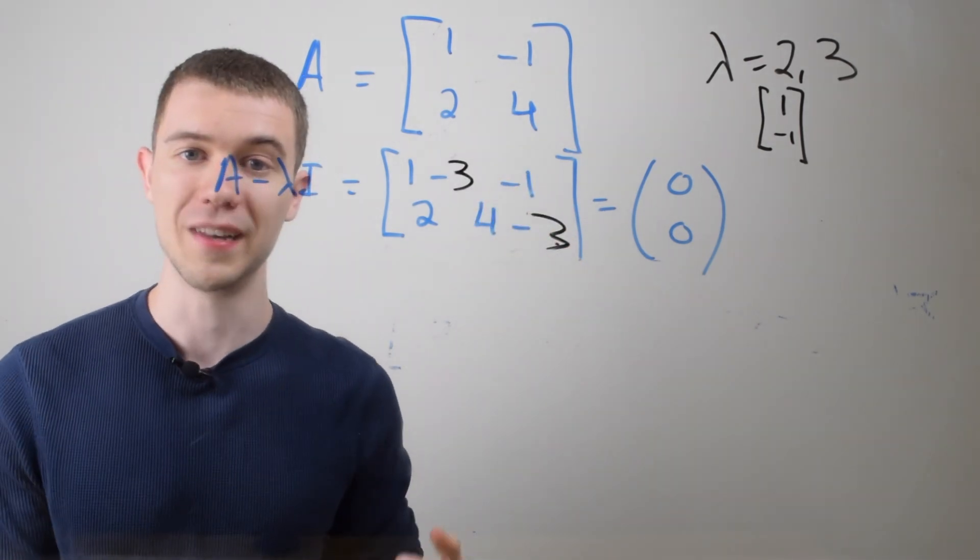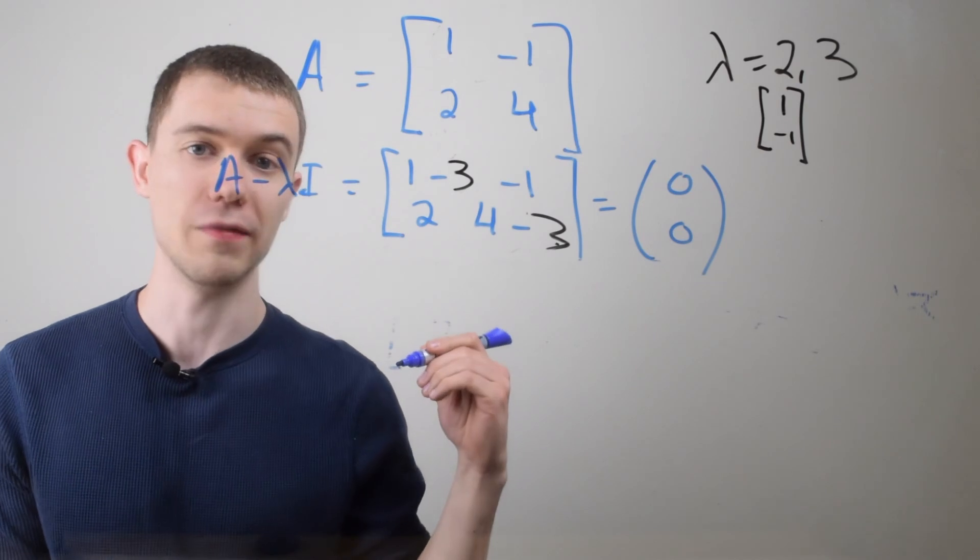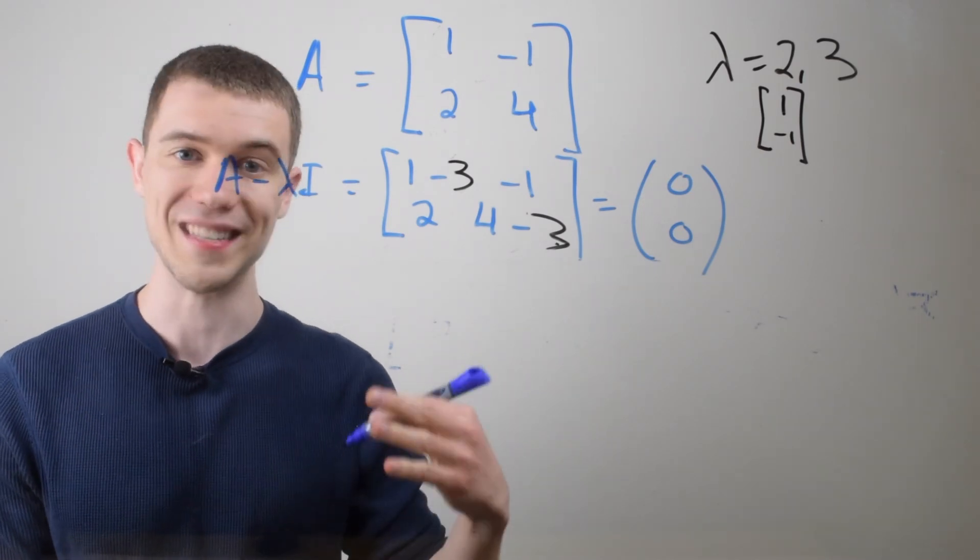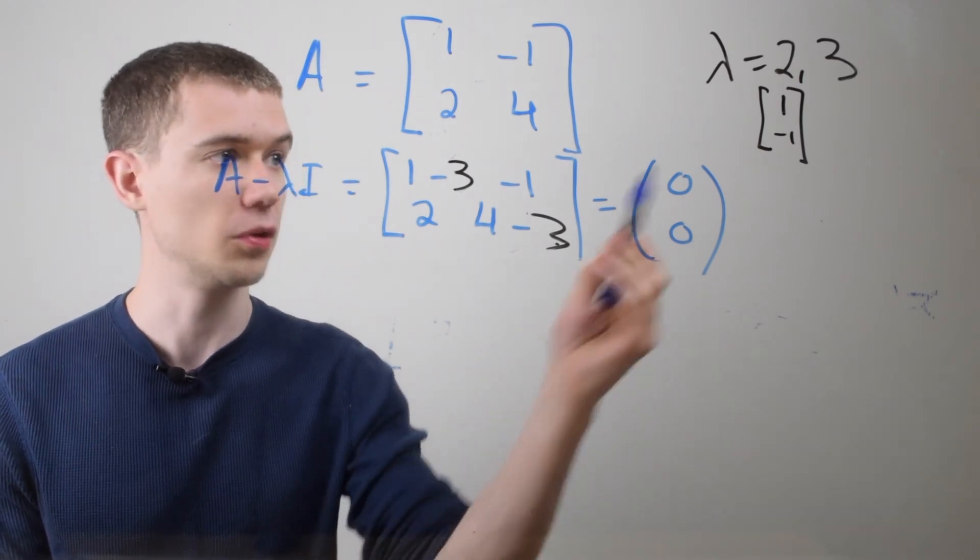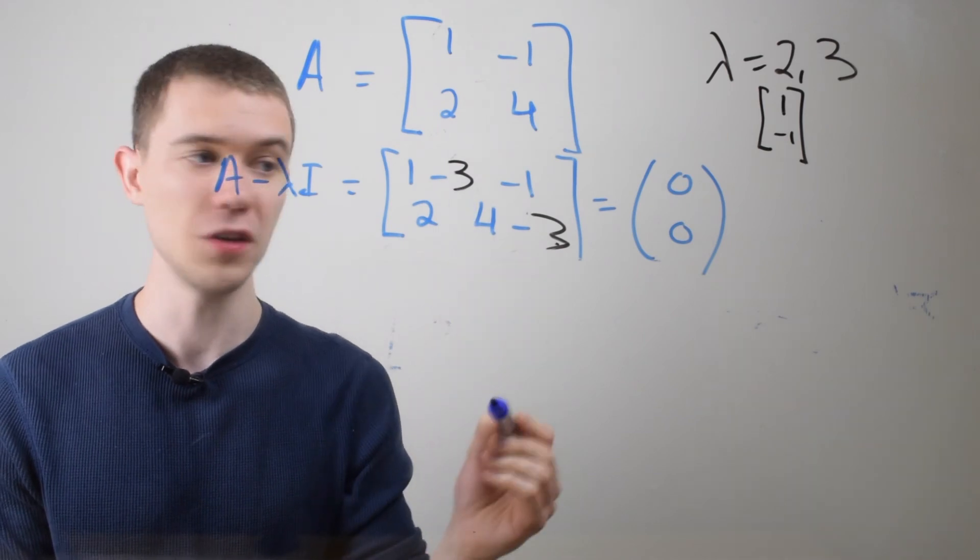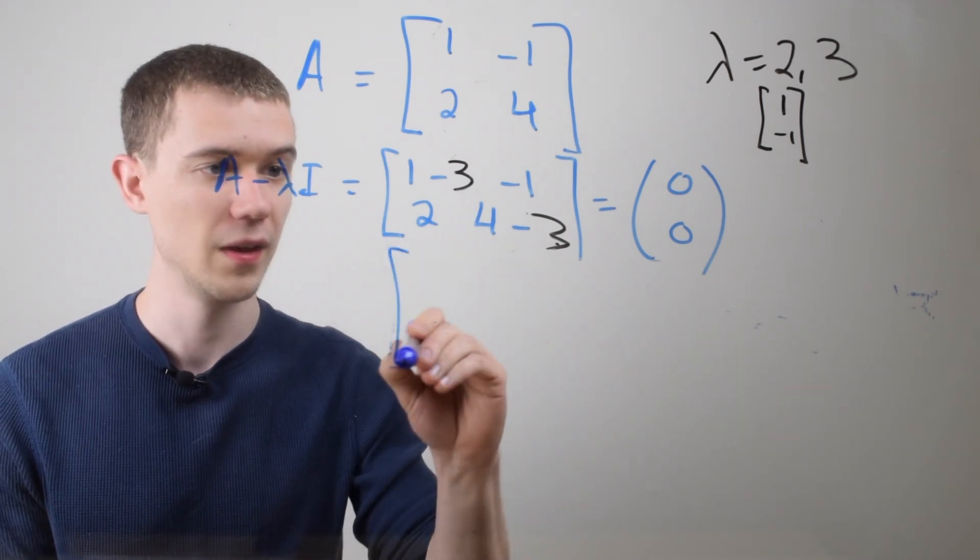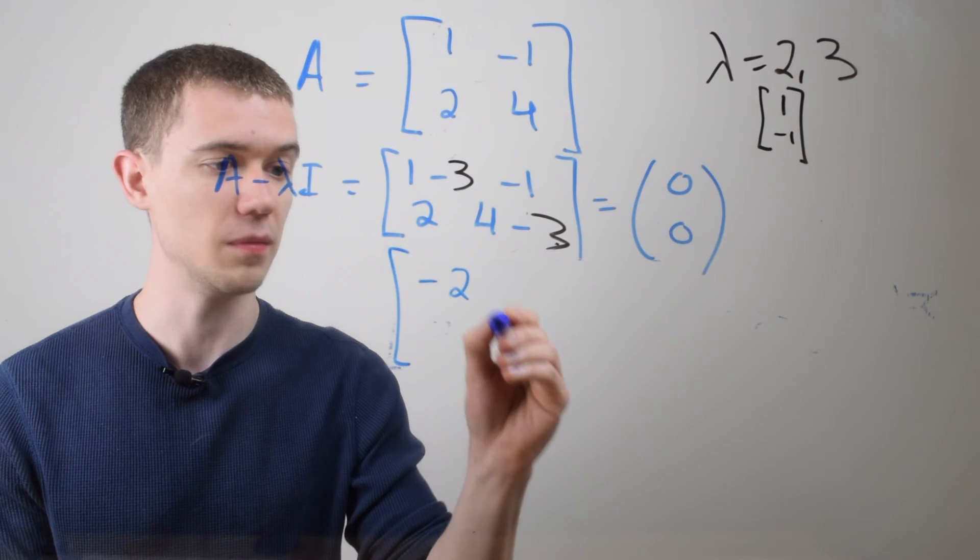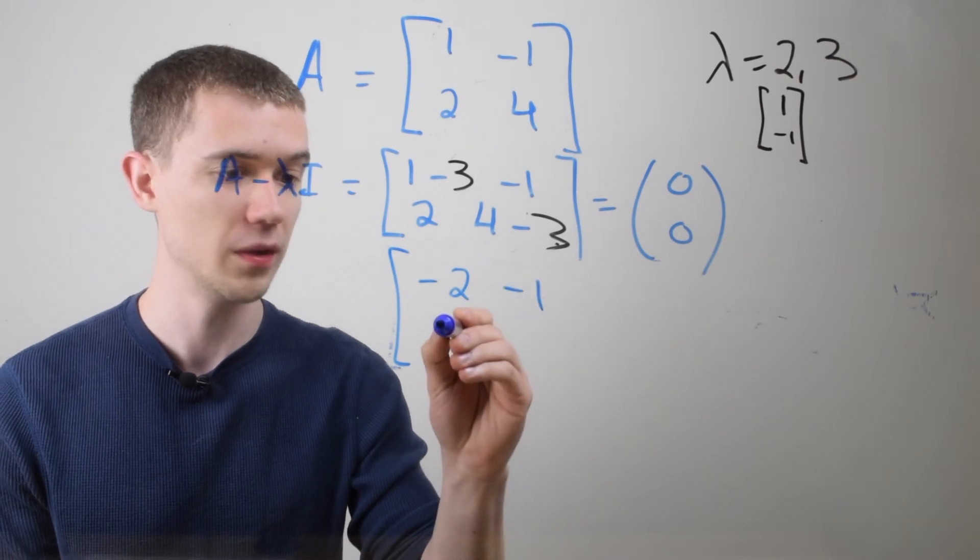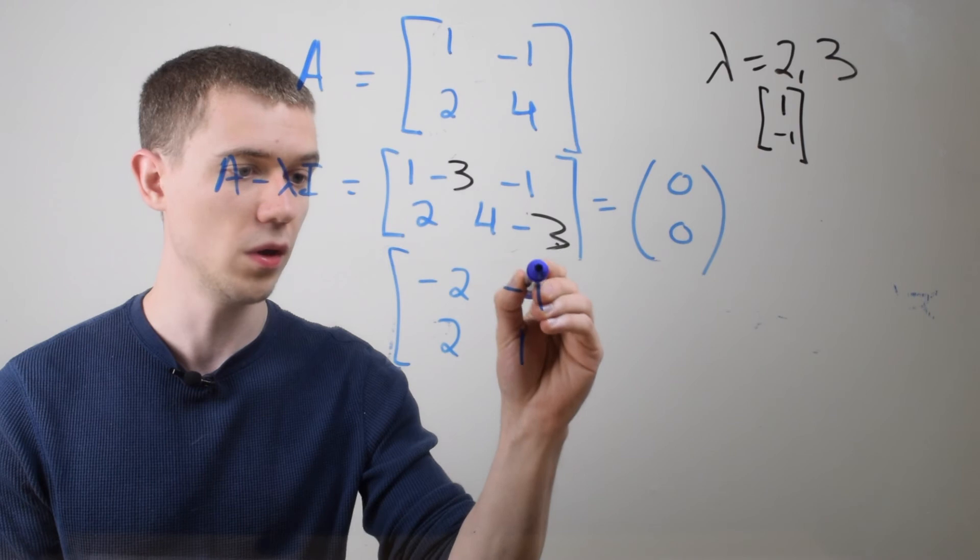Let's solve for the eigenvector associated with the eigenvalue of 3. So it's the exact same process. I'm just going to plug my lambda back into this matrix and set it equal to zero.